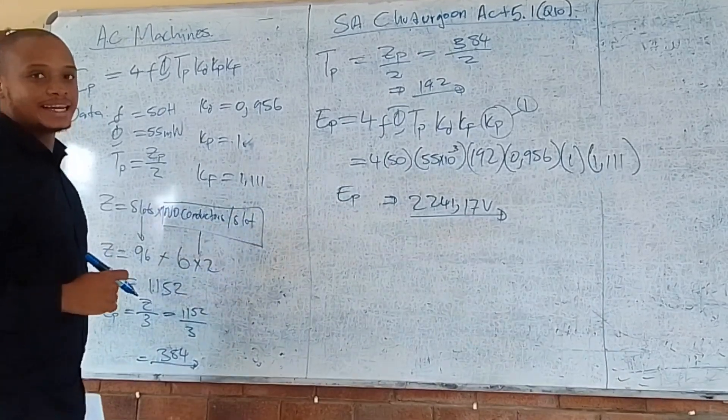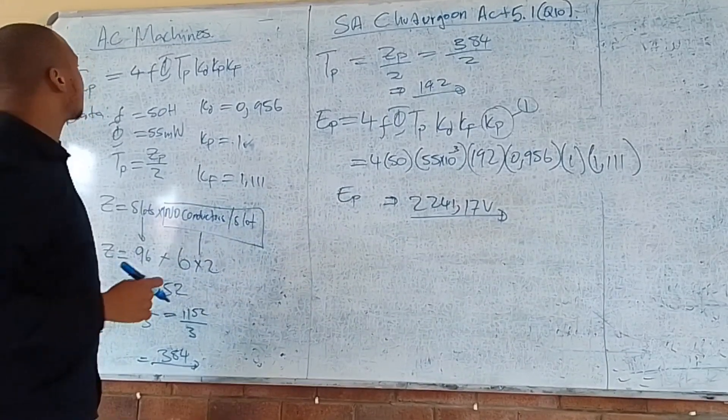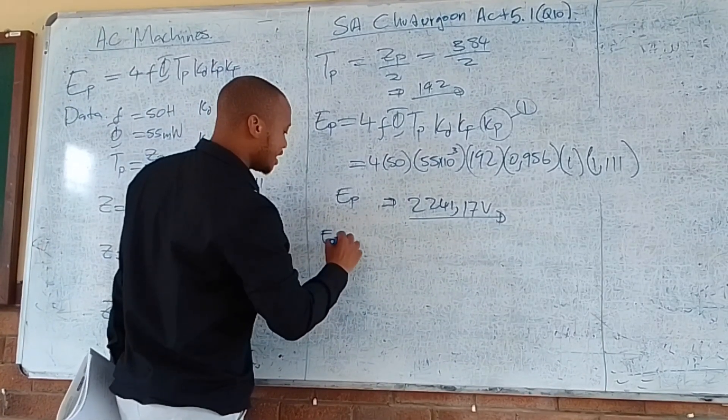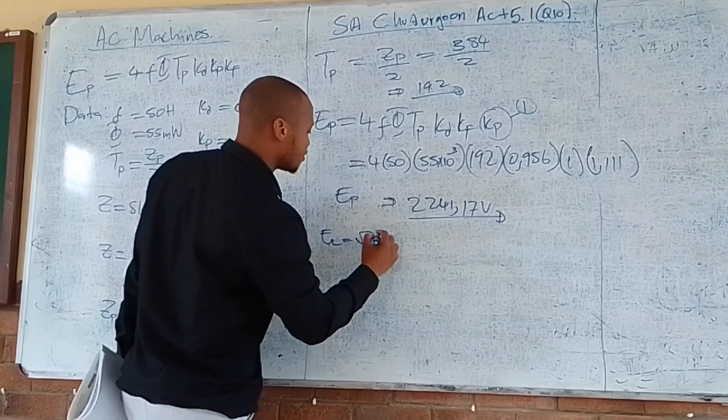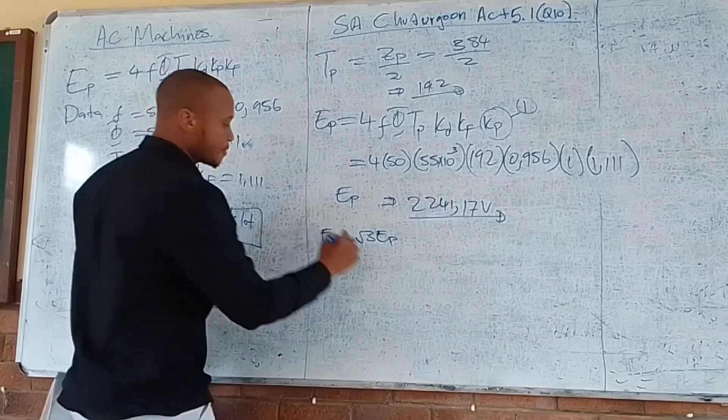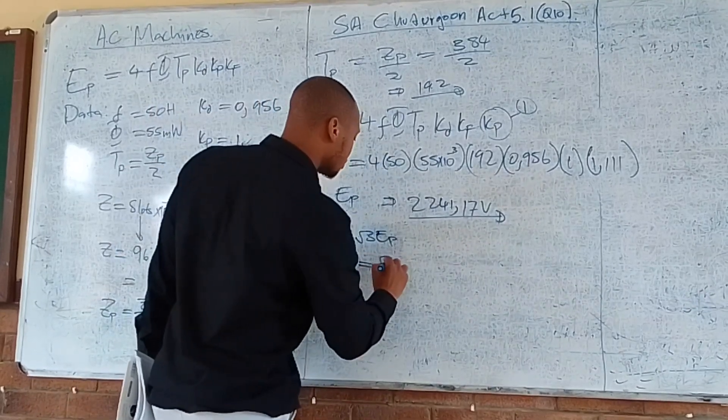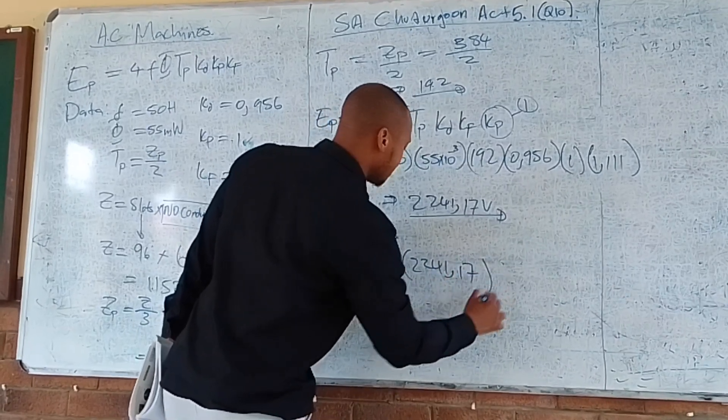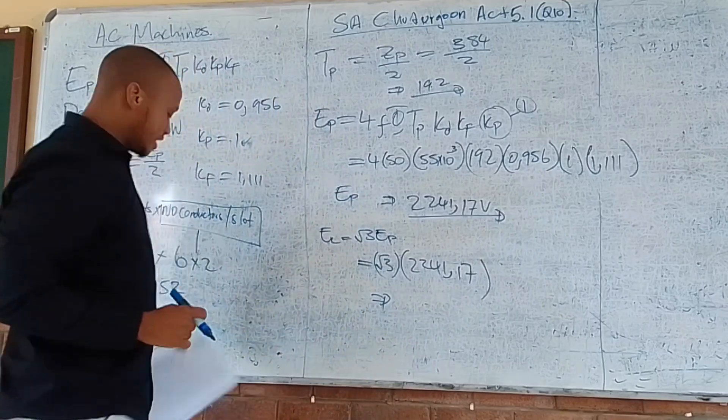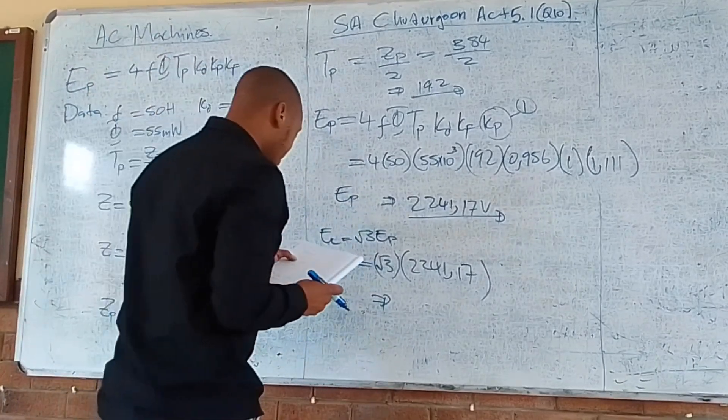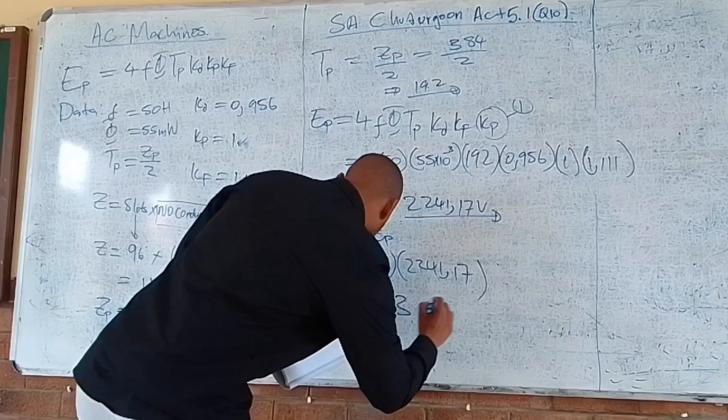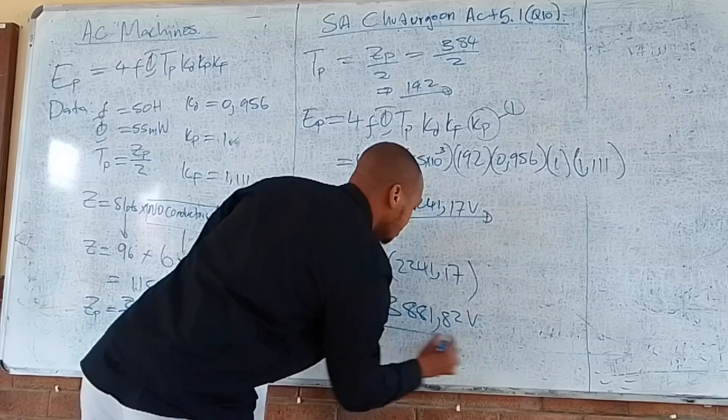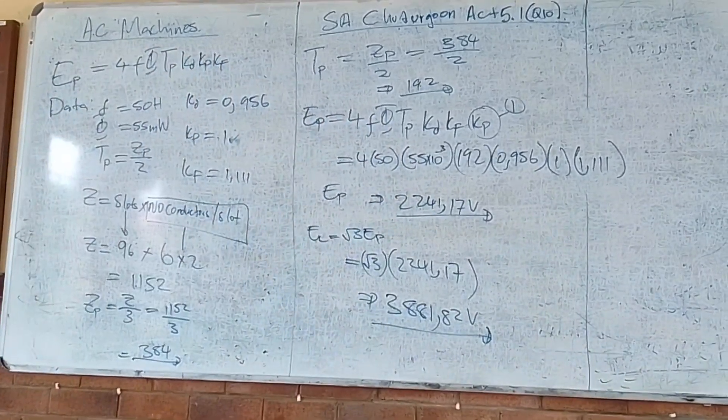The question wants you to calculate the line voltage. It's a star-connected machine, and you know that E line equals square root 3 times E phase. This means square root 3 multiplied by 22,041.75. When you calculate that, you should get 38,182.5 volts. That's the line voltage.